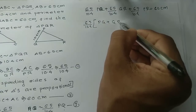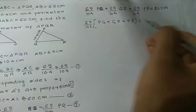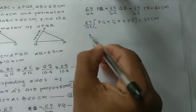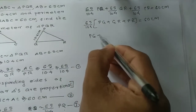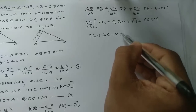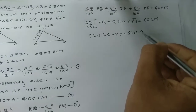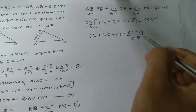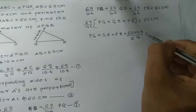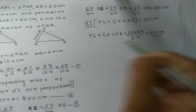PQ plus QR plus PR — the perimeter of triangle PQR — is equal to 60 multiplied by 10.4, divided by 6.5, which gives us PQ plus QR plus PR equal to 96 cm.